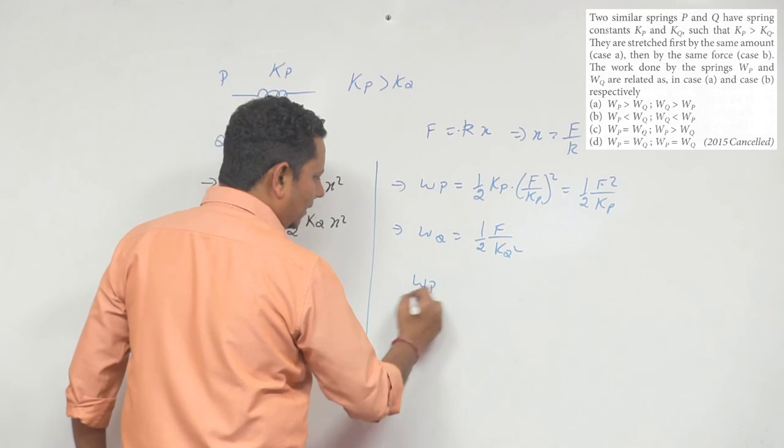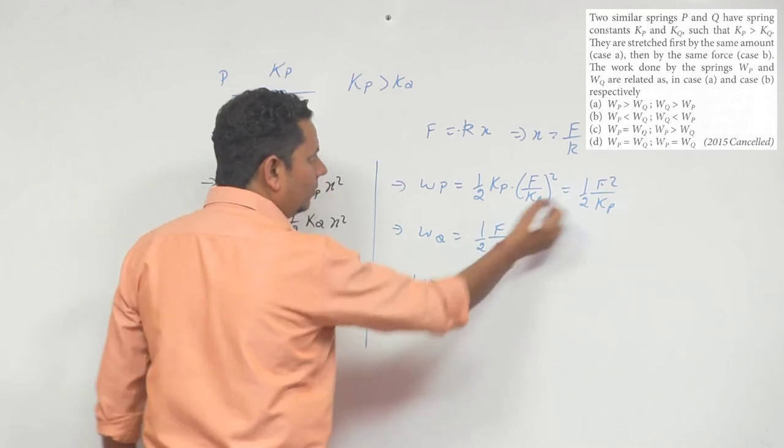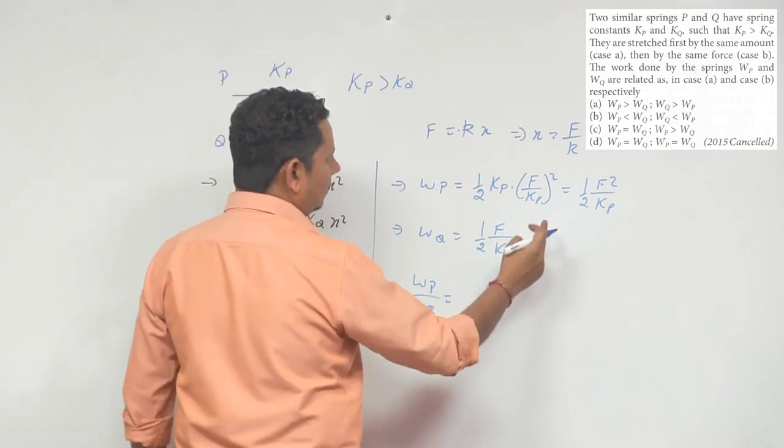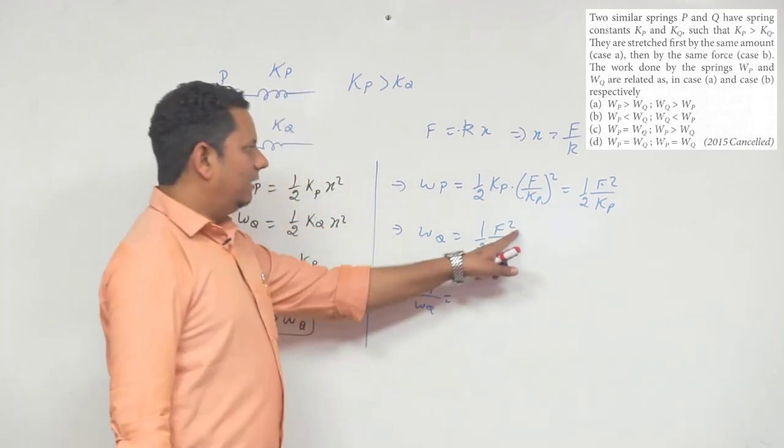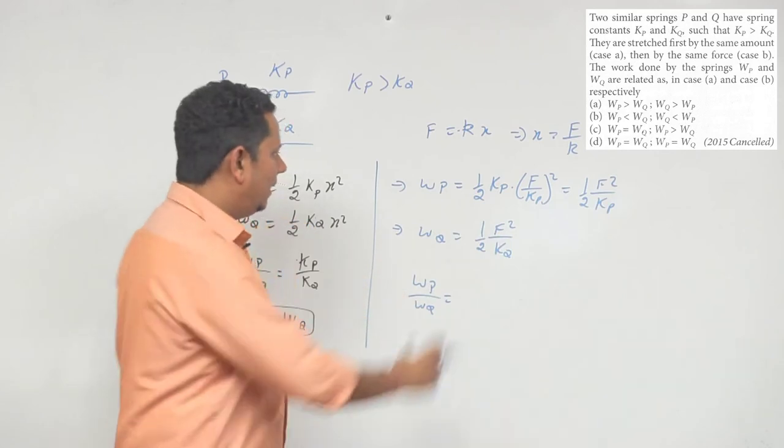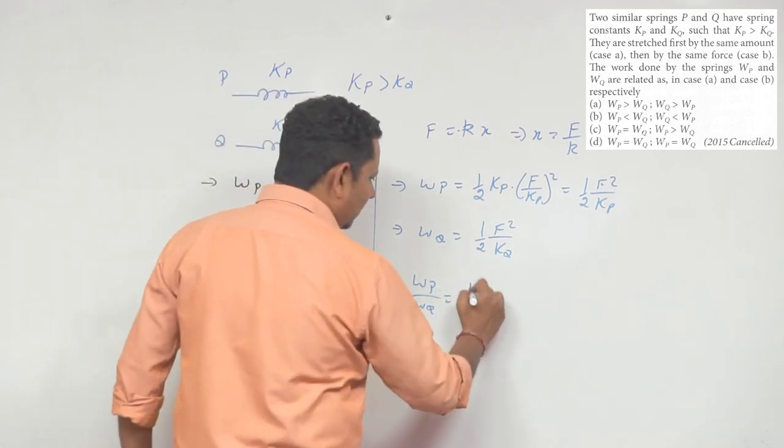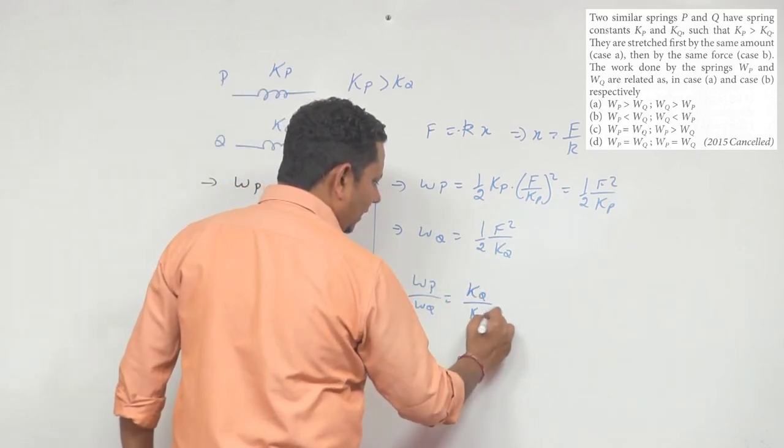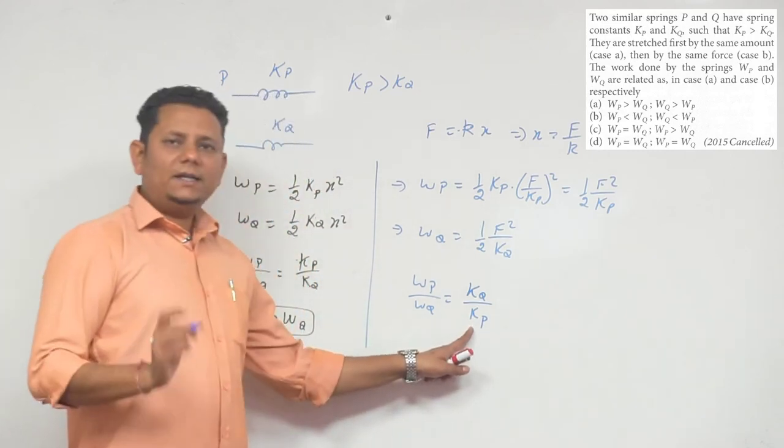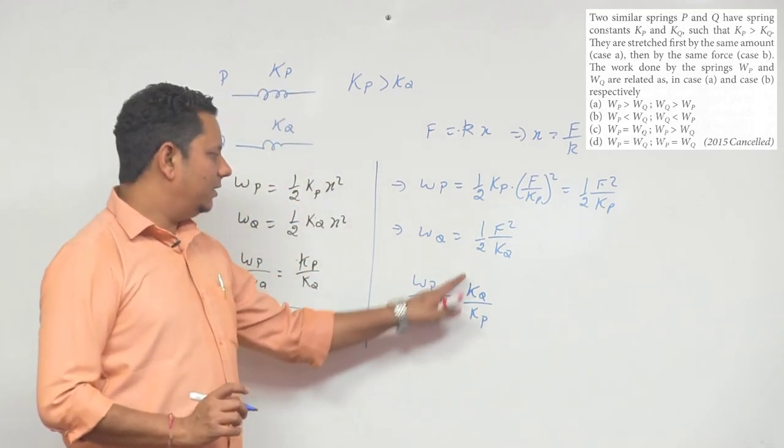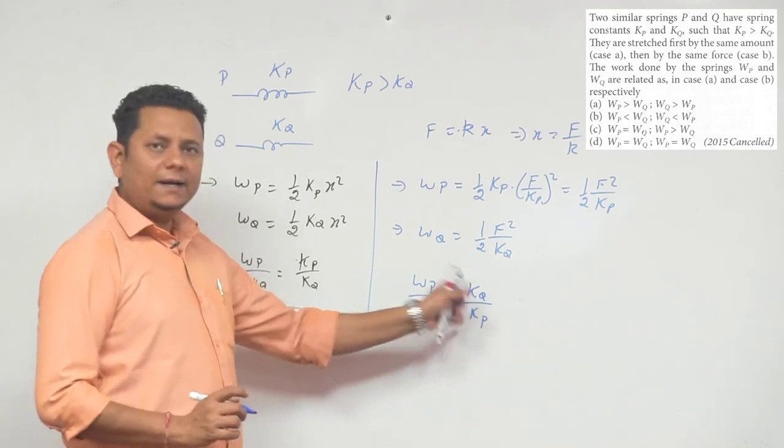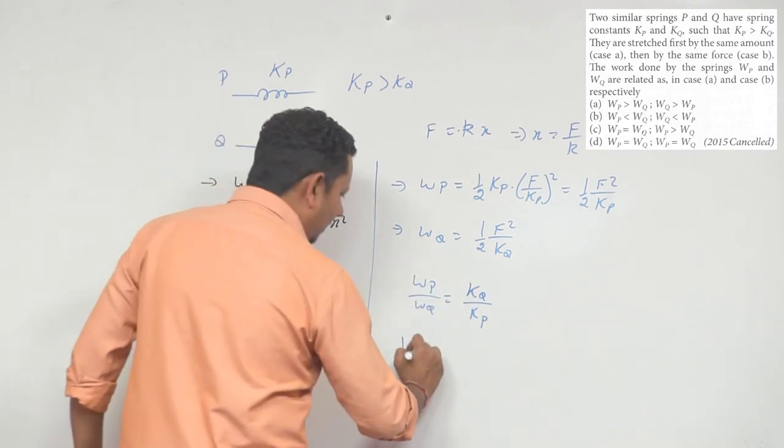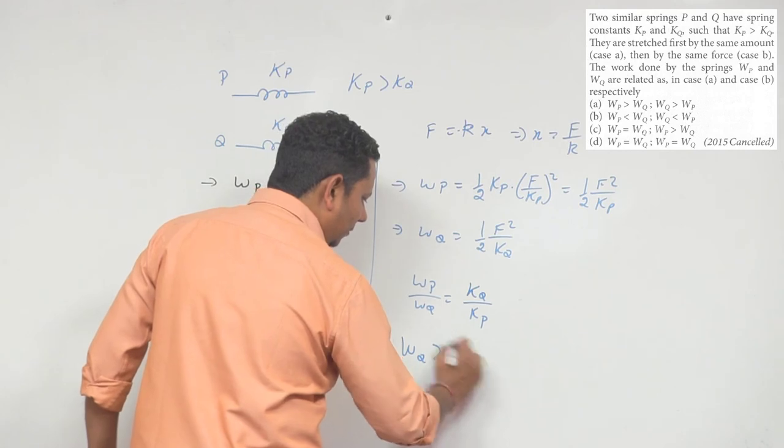If we divide WP divided by WQ, F squared will cancel out. So since F is the same, this will be equal to Kq divided by Kp. Since Kp has more value than Kq, this ratio will be less than one, so WQ will be greater than WP.